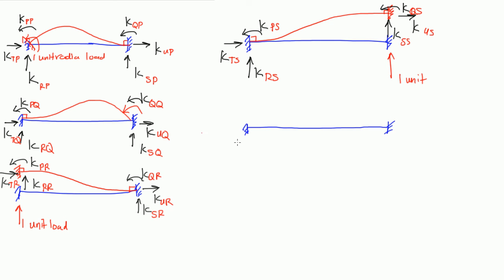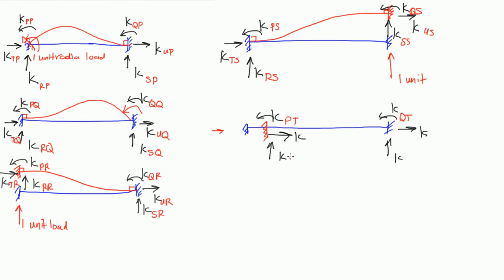Bear with me — here we apply a horizontal one unit load, and the beam is going to move inward. Again, this is going to cause six reactions: a rotation at each end, a vertical at each end, a horizontal at each end — all labeled K. The first subscript is the actual location; the second subscript is where the disturbance was caused, which this time is at T. So the reactions are K_PT, K_QT, K_RT, K_ST, K_TT, and K_UT.